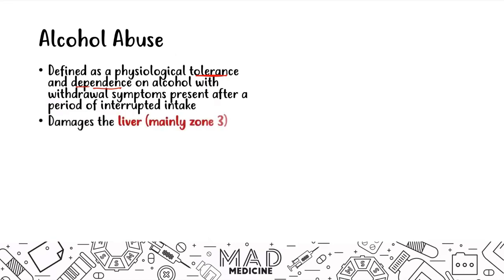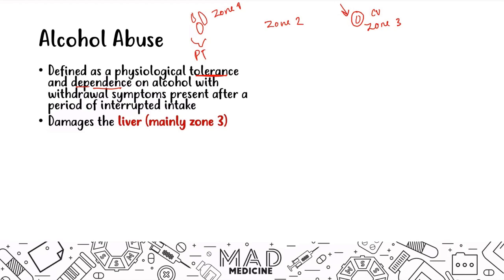Alcohol damages the liver, mainly zone three. Zone one is located near the portal triad, zone two is the parenchyma, and zone three is nearest to the central vein — that is where alcohol affects the liver. Everything else, mainly hepatitis viruses, affects zone one because that's where the blood comes in. But zone three is alcohol.